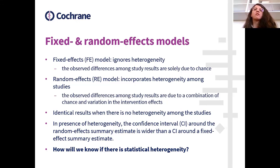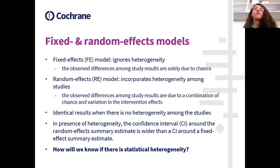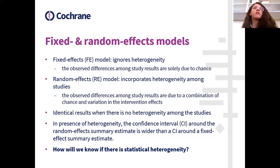The random effects model incorporates heterogeneity among studies, assuming observed differences are due to a combination of chance and variation in intervention effects. In a perfect scenario with no heterogeneity, fixed and random effects models give identical results. But when heterogeneity is present, the confidence interval around the random effects summary estimate is wider, making the random effects model a more conservative option.